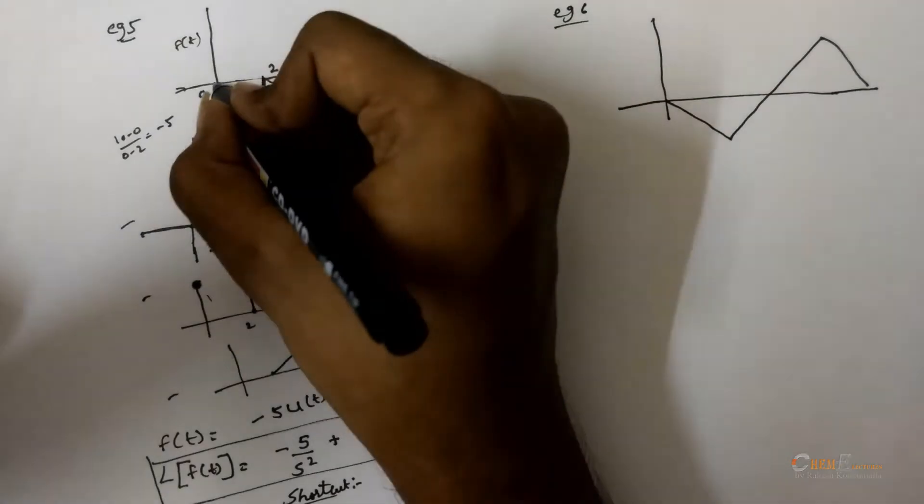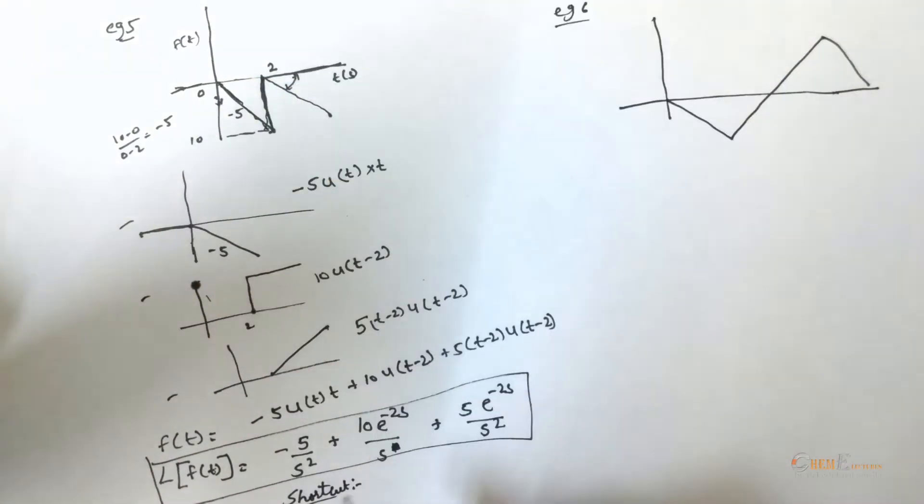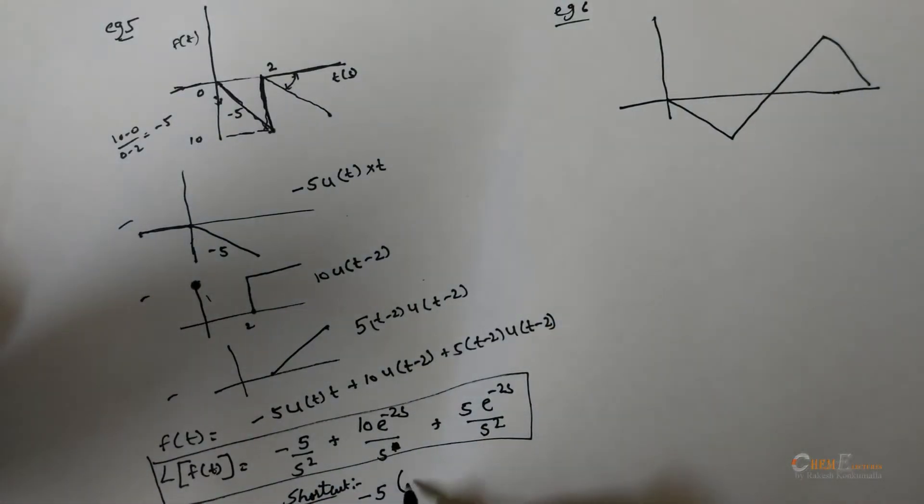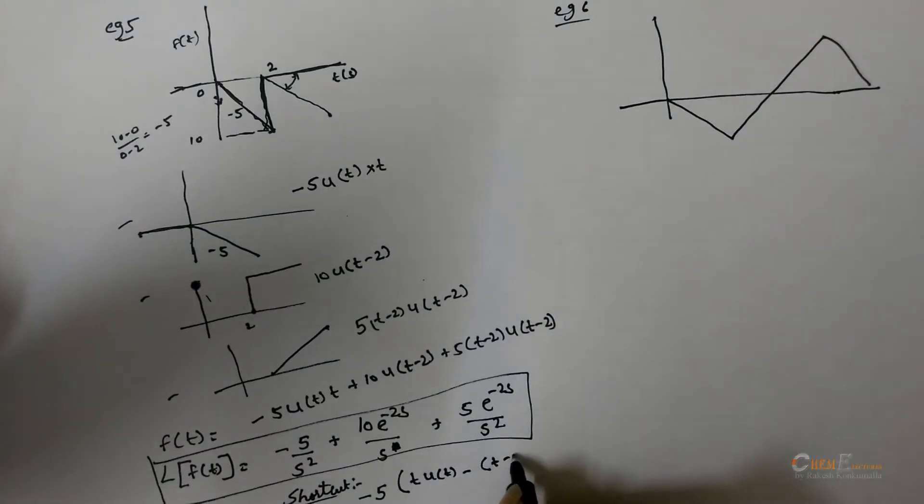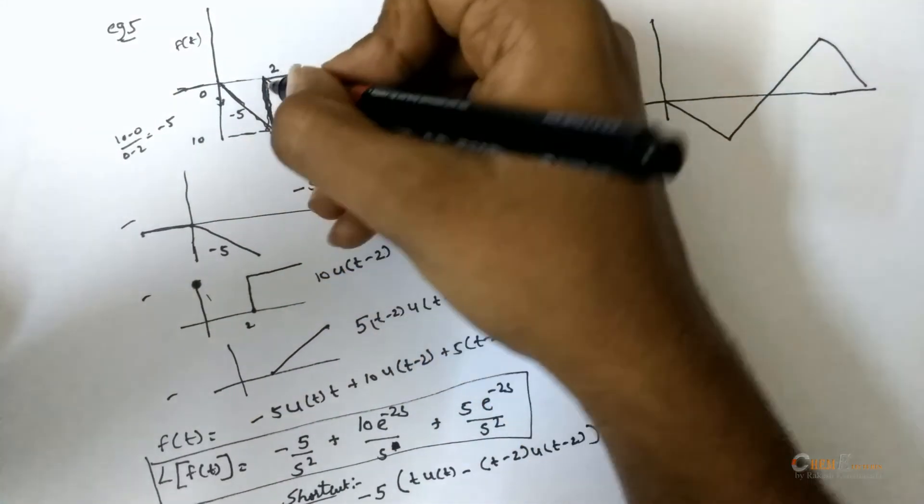Initially it is at 0 and having a decrement. For this write, there is a decrement of slope minus 5 and t u. Take the difference minus t minus 2 u. Then, there is a step function with a magnitude 10.